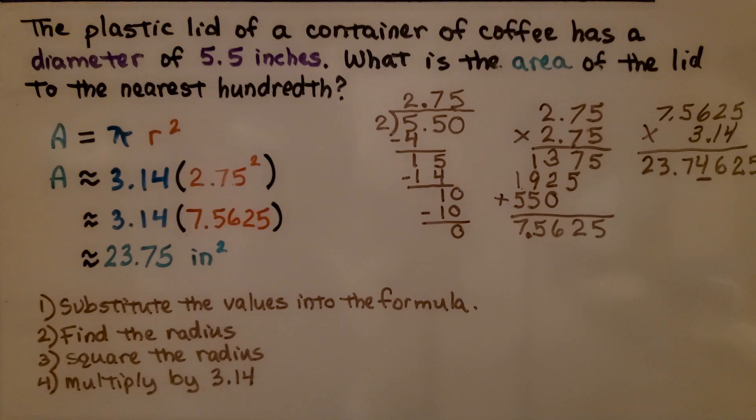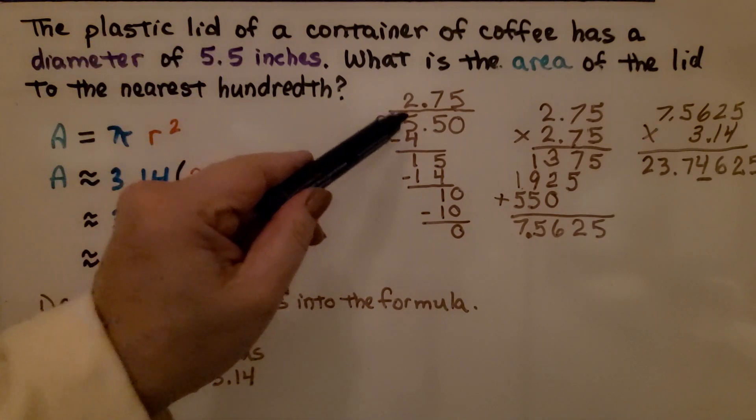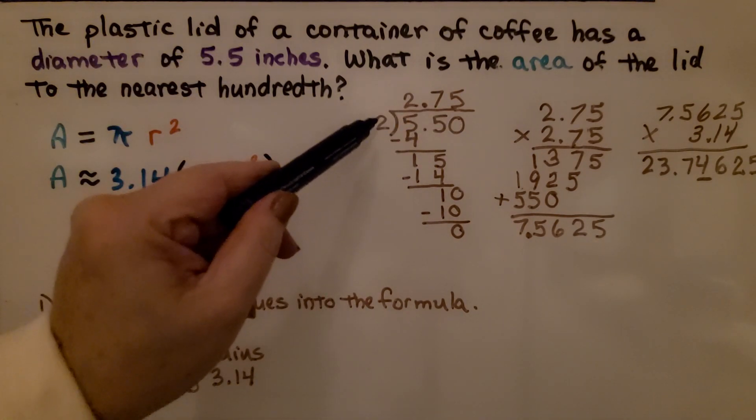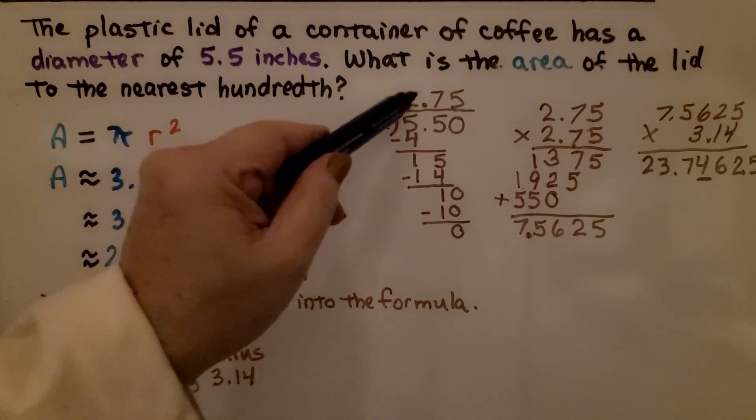The plastic lid of a container of coffee has a diameter of 5.5 inches. What's the area of the lid to the nearest hundredth? Well, first of all, we don't have the radius, do we? We have the diameter. So we know we can do 5.5 divided by 2 to get the radius. That's 2.75.